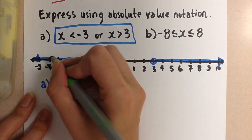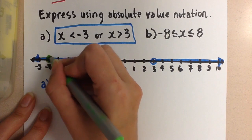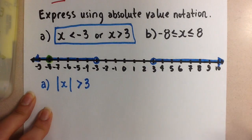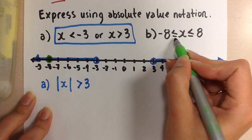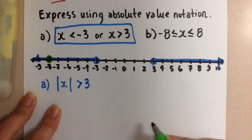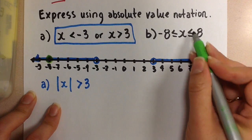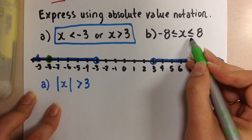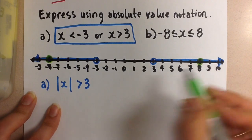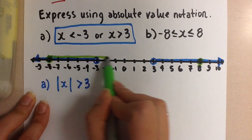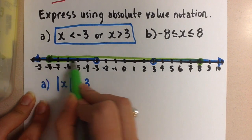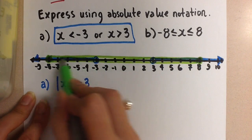On the number line this looks like this. We put a closed circle on the negative 8 because this is a less than or equal to so it includes the negative 8, and then we put a closed circle on the positive 8 again because this is a less than or equal to sign which includes the 8, and then we have any numbers in between on the number line.